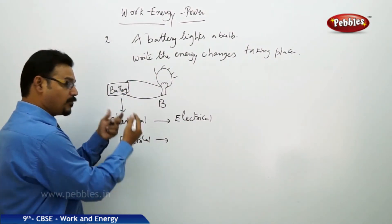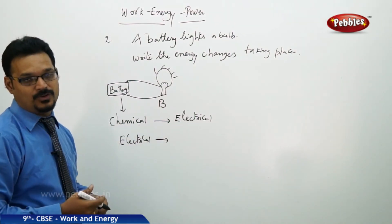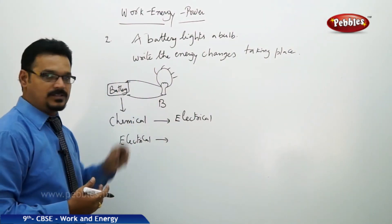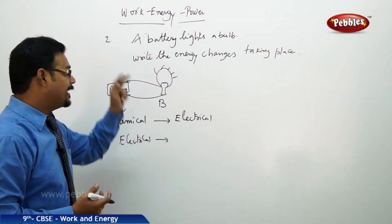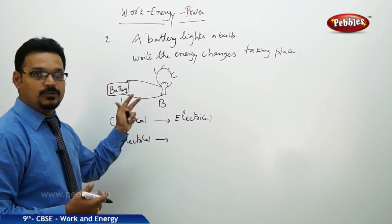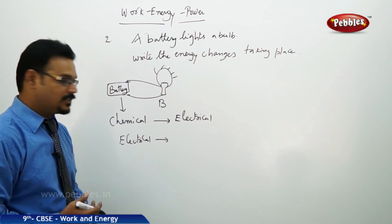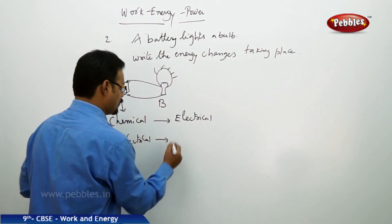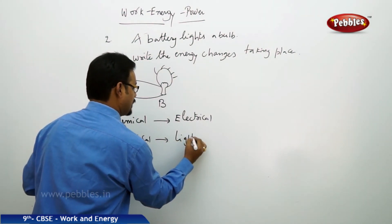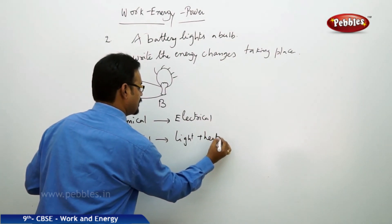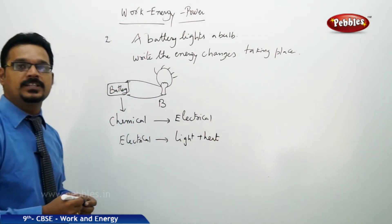In the battery, the chemical energy turns to electrical energy. The electrical energy supplies to the bulb and the bulb glows, giving light energy. After some time, you touch the bulb and feel hot, meaning in addition to light energy, you are also getting heat energy. Therefore, electrical energy converts to light and heat.